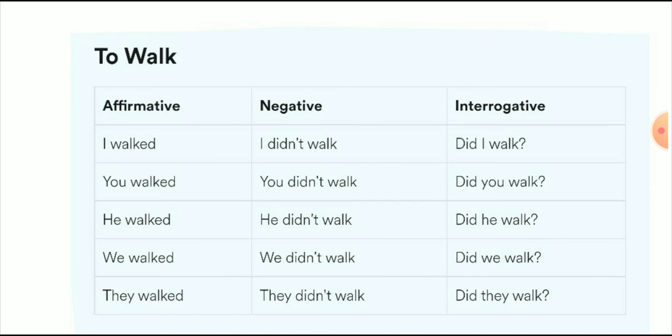Now I want to explain the difference between do, does, and did. Do and does are both used in the present tense. We use 'do' when the subject is plural, and 'does' when the subject is singular. But we use 'did' in the past tense, whether the subject is singular or plural. For example: I did, we did, he did, she did, you did.